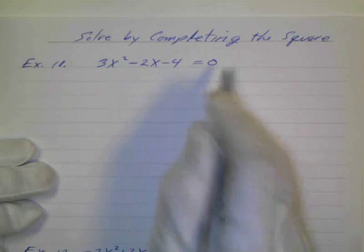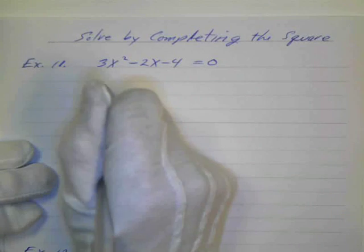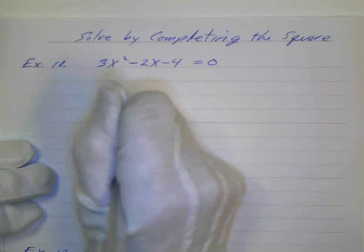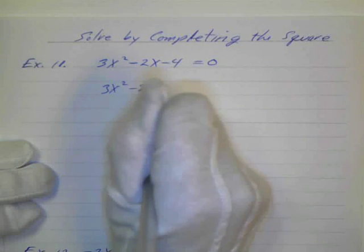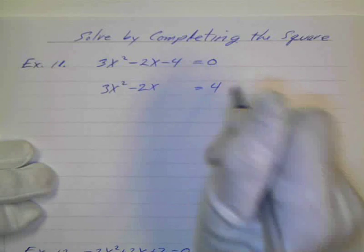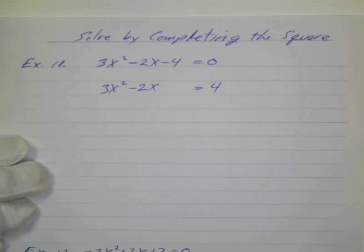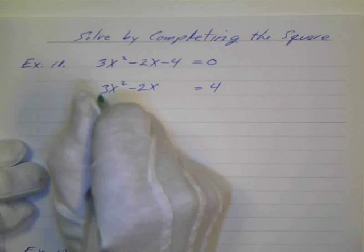So again, this time I'll just add the 4 to both sides in my first step, so I've got 3x squared minus 2x equals 4, and then I'll divide everything by 3 because we want to have a 1 in front of the x squared.